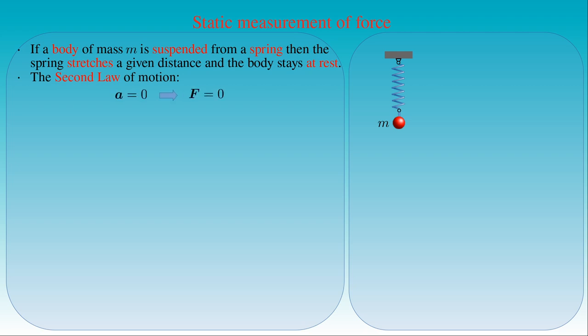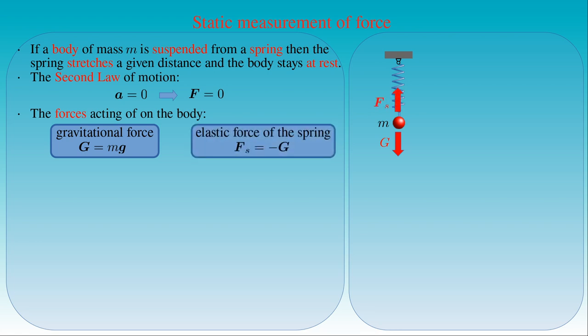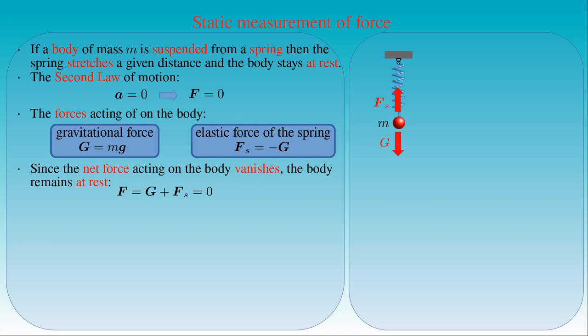However, there are two forces acting on the body. The first is the gravitational force pulling the body downward — even if the body is at rest — represented by the weight G equal to mass m times gravitational acceleration g. The second force is the elastic force due to the stretch of the spring; the amplitude of force fs exerted by the spring equals the weight G but acts in the opposite direction, so fs equals −G. The downward pull due to the gravitational force is compensated by the elastic force pulling the body upward. The net force is the vector sum of these forces, which vanishes since the two forces have the same magnitude but opposite directions.